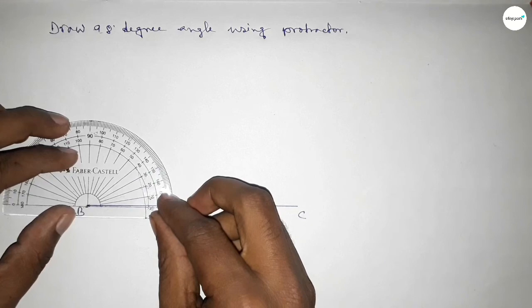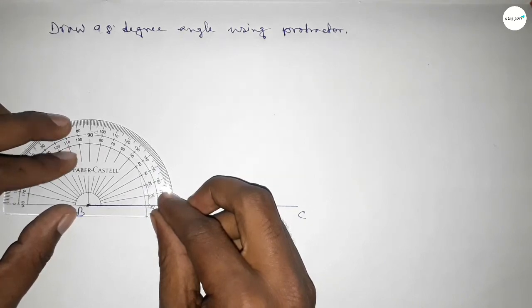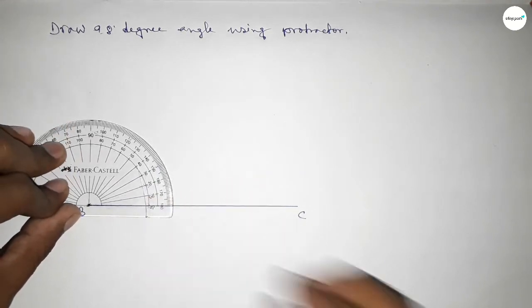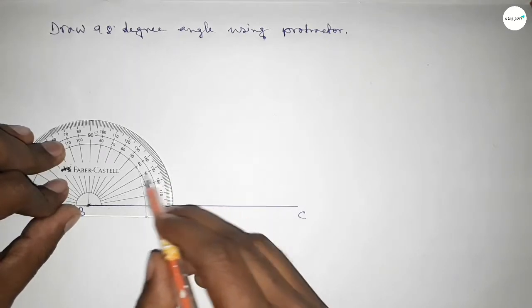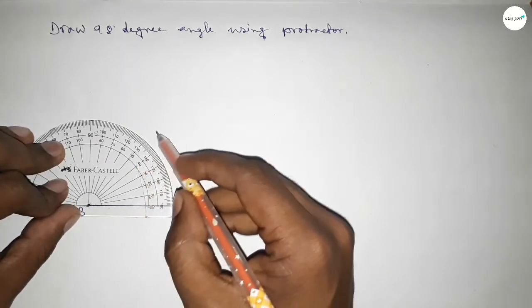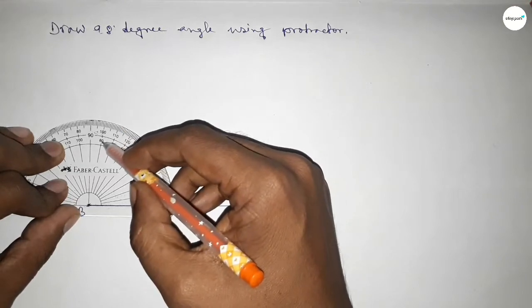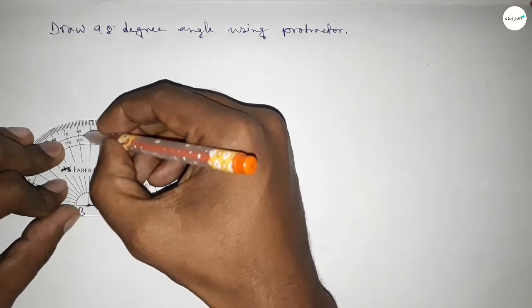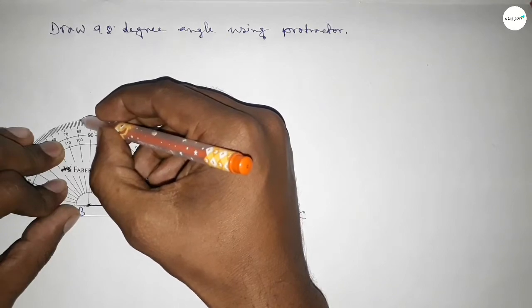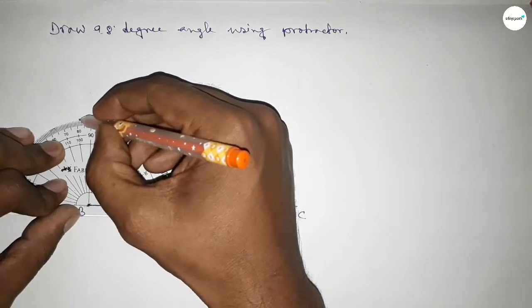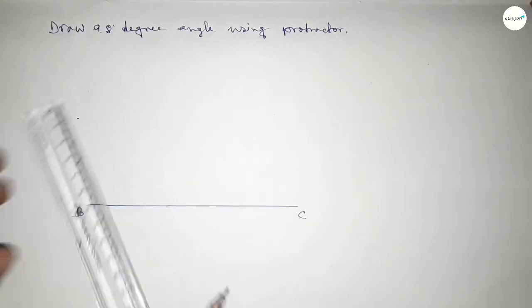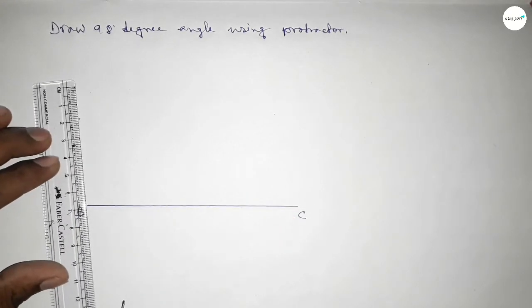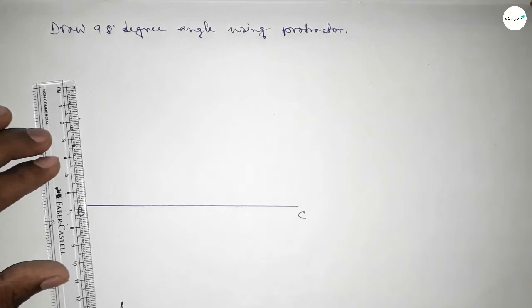Then counting the angles - this is starting angle: 0, 10, 20, 30, 40, 50, 60, 70, 80, 90, 95, 96, 97, 98. So this is 98 degrees. Now joining this side to get a 98-degree angle.